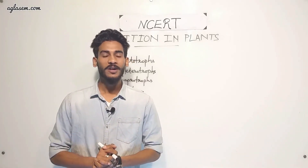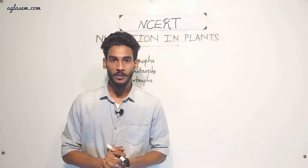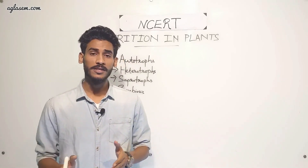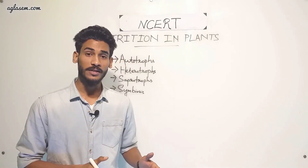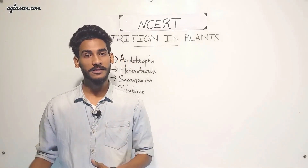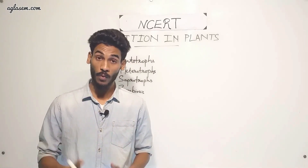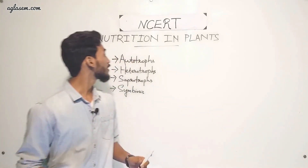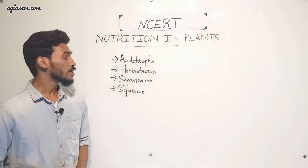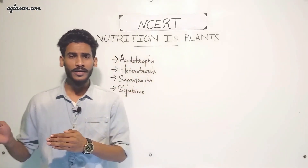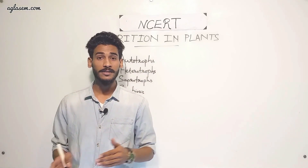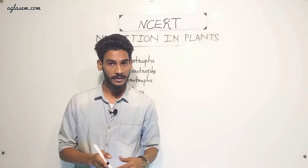Hello everyone and welcome to Aglasem School. Today we are going to discuss the solutions of NCERT Class 7 Science Chapter 1, that is Nutrition in Plants. Before going to the chapter solutions, let's discuss the chapter at a glance.